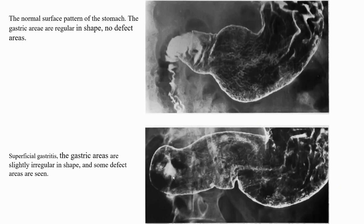This is the upper GI study. The upper image shows the normal surface pattern of the stomach — the gastric areas are regular with no defect areas. The lower image shows superficial gastritis, where the areas are slightly irregular and some defect areas are visible.